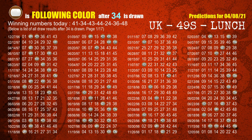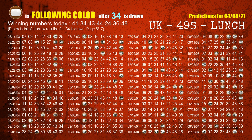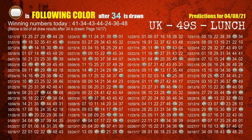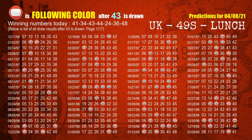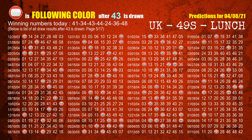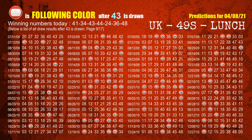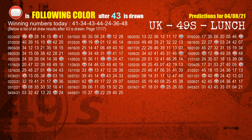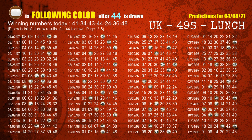The second winning number is 34; the most frequently following color is brown when 34 is the winning number in the last draw. The third winning number is 43; the most frequently following color is red. The fourth winning number is 44; the most frequently following color is brown.